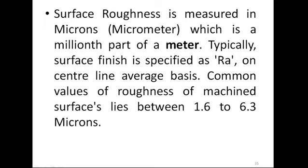Surface roughness is measured in microns or micrometers, which is a millionth part of a meter. Typically, surface finish is specified as RA on a centerline average basis. Common values of roughness of machine surfaces lie between 1.6 to 6.3 microns, and on the basis of these values we judge the surface roughness.